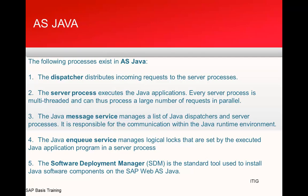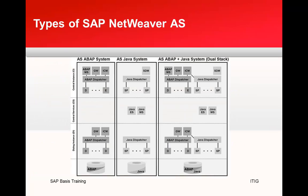The types of SAP NetWeaver AS are: AS ABAP system, AS Java system, and a dual-stack system containing both ABAP and Java stacks. SAP has moved away from the dual-stack approach. Currently only Solution Manager and PI remain as dual-stack; PI also has a Java-only version, and SAP is gradually moving away from dual stack for PI as well. Only Solution Manager remains dual stack for now.